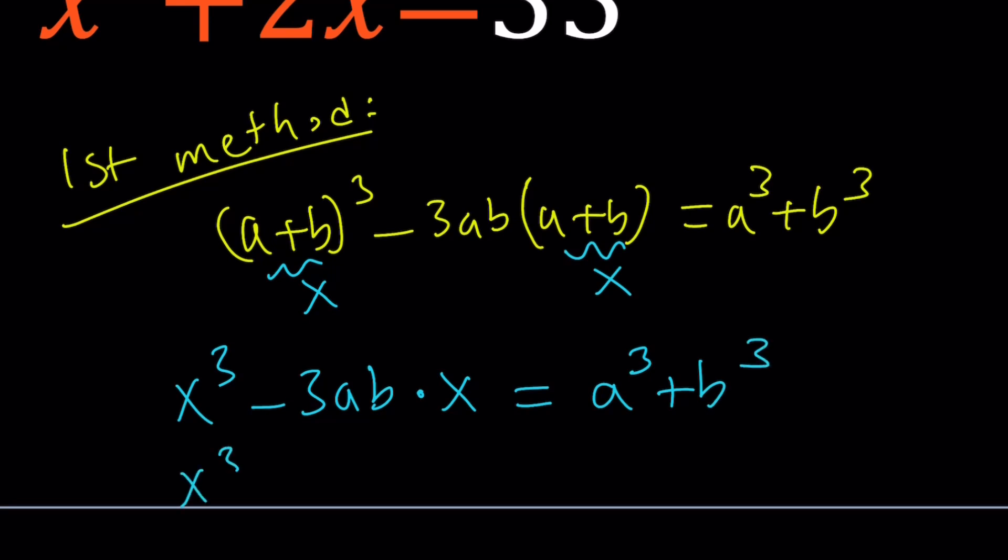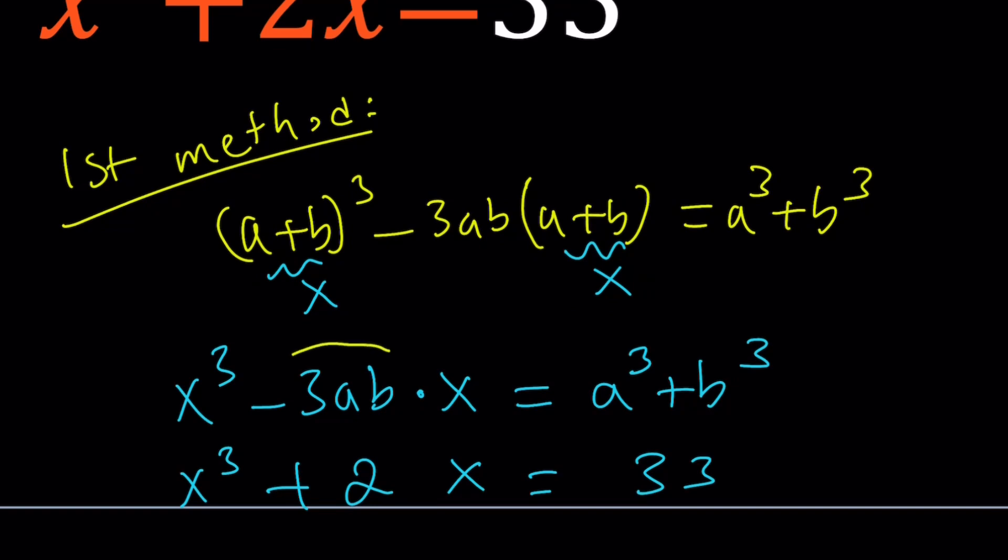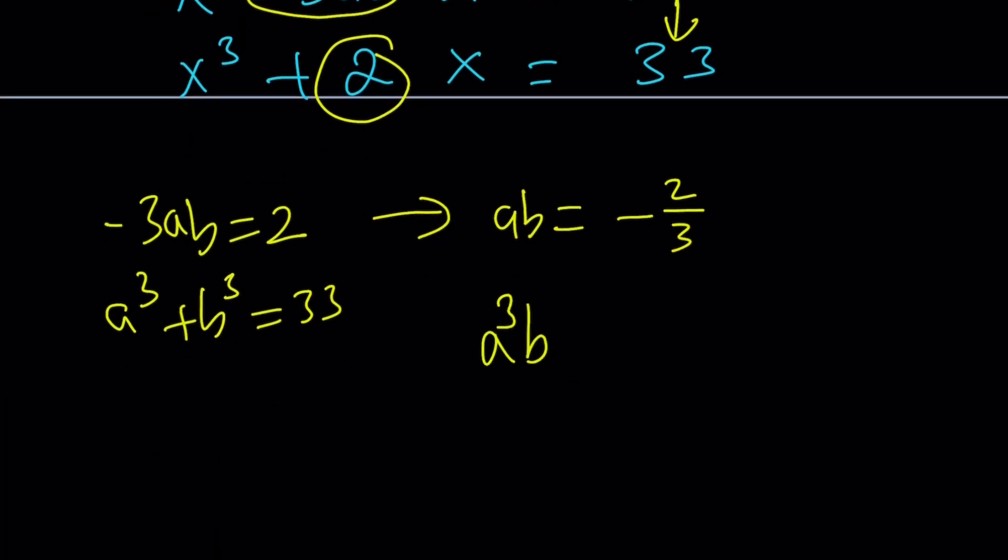Then we get x³ - 3ab·x = a³ + b³. Now, if you compare this equation to the other one, you'll soon notice that you can correspond the coefficients. For example, the coefficient of x here is negative 3ab, and here it's positive 2. So, negative 3ab equals 2, and a³ + b³ equals 33. If I cube both sides, I get a³b³ equals negative 8 over 27.